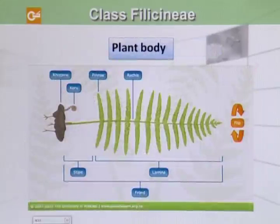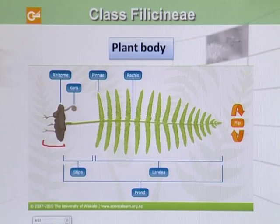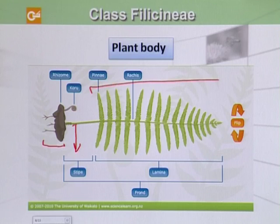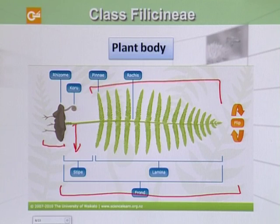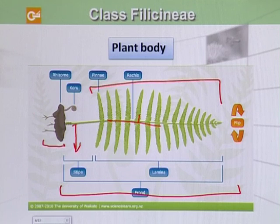If we see the plant body diagram, you can see that there is a rhizome and it has a stem which is reduced and underground. This portion is called stipe and the whole leaf structure is called lamina. The complete structure from stipe to lamina is called a frond.